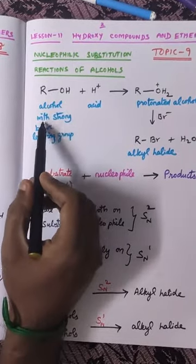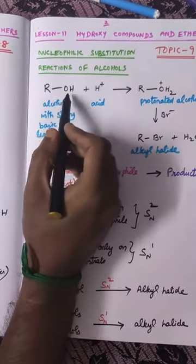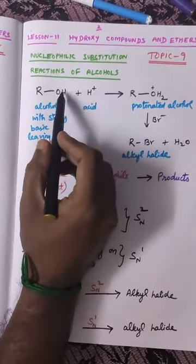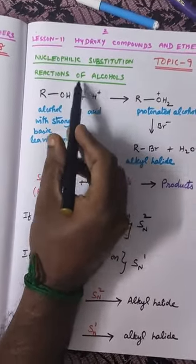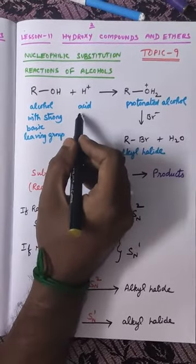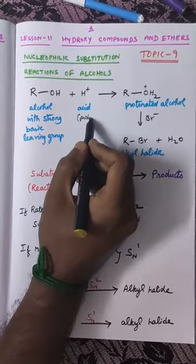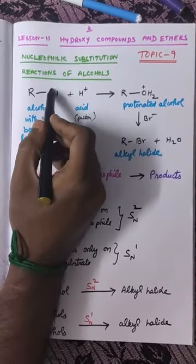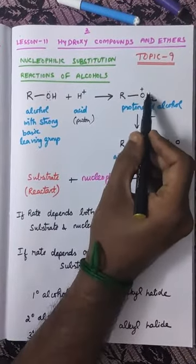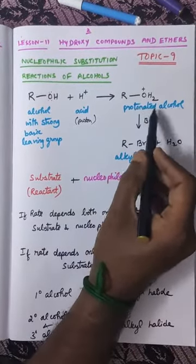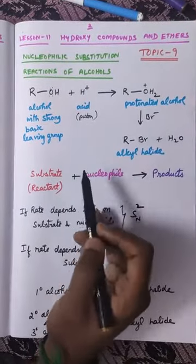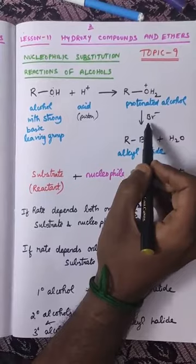So here, look at the equation ROH — it is an alcohol containing a strong basic leaving group. When it reacts with an acid, the basic leaving group reacts with the acid and forms OH2. Here H⁺ is otherwise called as a proton. This proton will get added upon the electronegative oxygen and forms ROH2⁺, that is called as protonated alcohol.